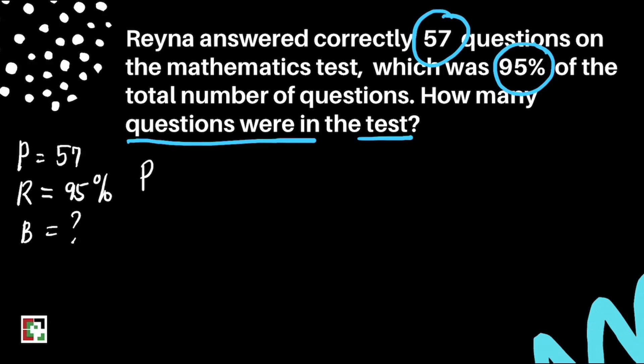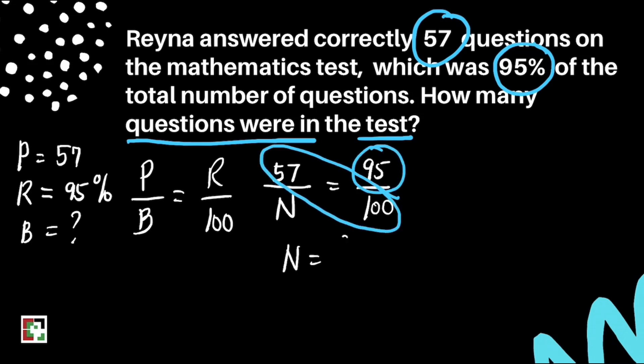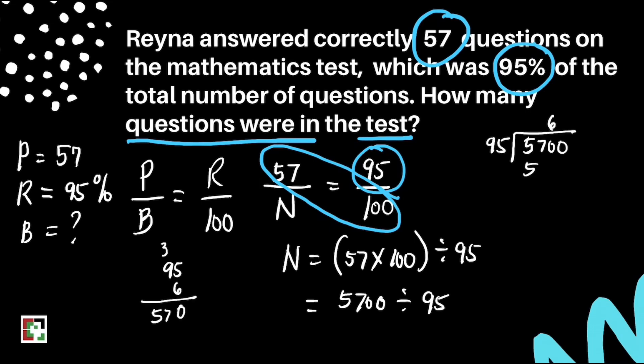We'll be using the same formula: percentage over base equals rate over 100. Let's substitute. 57 over N equals 95 over 100. How to get the value of N is to do cross multiplication. That's 57 times 100 divided by 95. 57 times 100 is 5,700 divided by 95. Our answer equals 60. It means there are 60 questions in that mathematics test. That's our final answer.